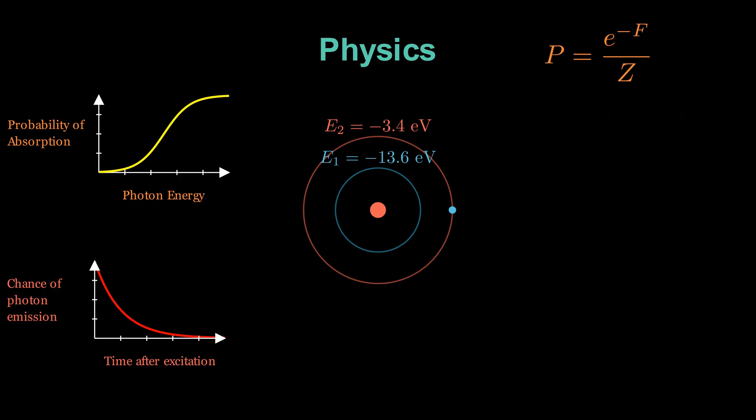Here, F is the energy of the state multiplied by something called the inverse temperature, denoted by beta. So, the probability takes the following form. The quantity Z is just a normalization factor, called the partition function, that ensures all probabilities sum to one.